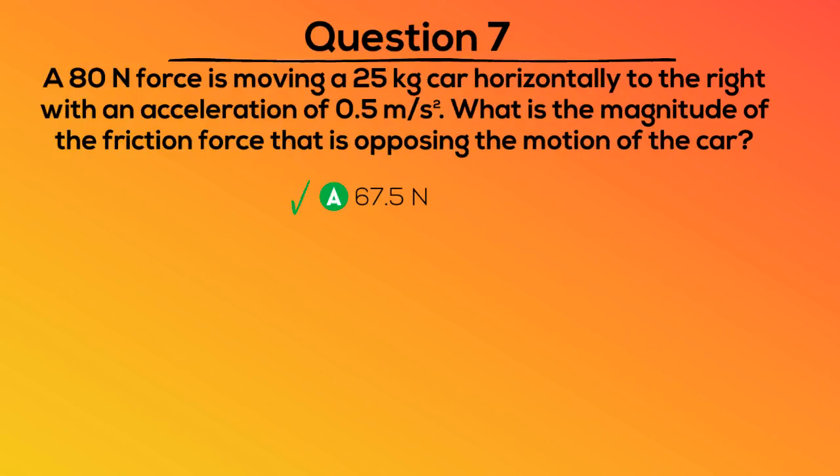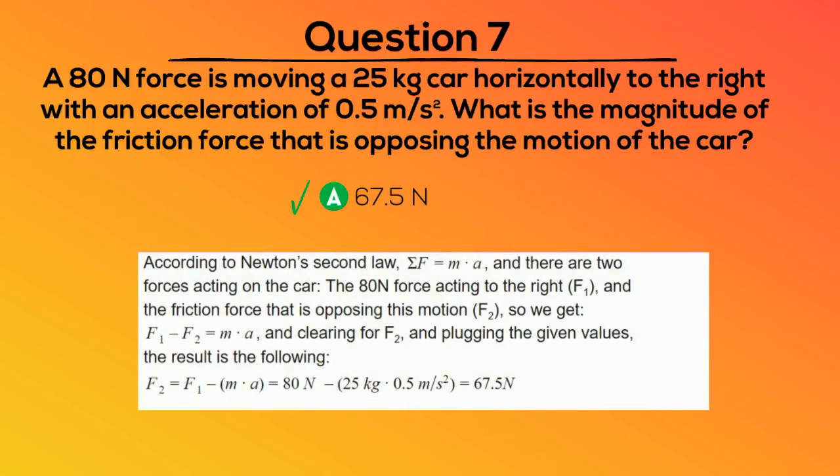The correct answer is A. According to Newton's second law, force equals mass times acceleration, and there are two forces acting on the car: the 80 newton force acting to the right, F1, and the friction force that is opposing this motion, F2. So we get F1 minus F2 equals M times A, or mass times acceleration, and clearing for F2 and plugging the given values, the result is the following.